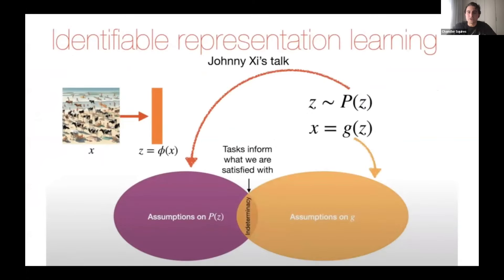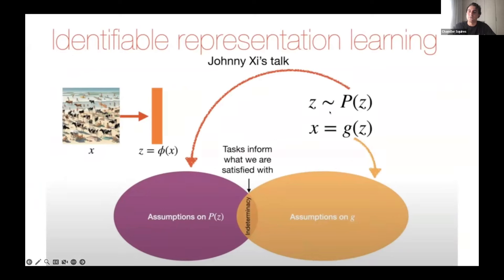We started off the talk series discussing identifiable representation learning — the very first talk — asking what kinds of setups, where we have latent variables and observed variables as deterministic functions of those variables, will lead us to settings where we can identify either exactly the distribution of latent variables or identify it up to some indeterminacy based on downstream tasks.